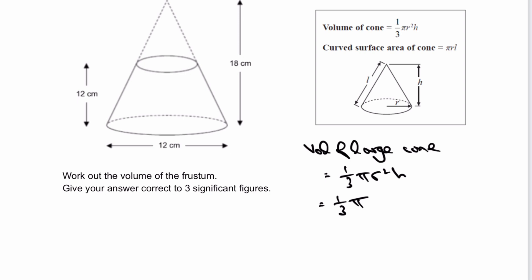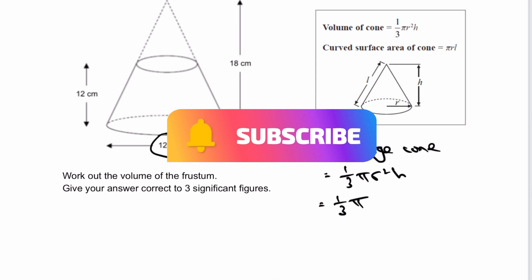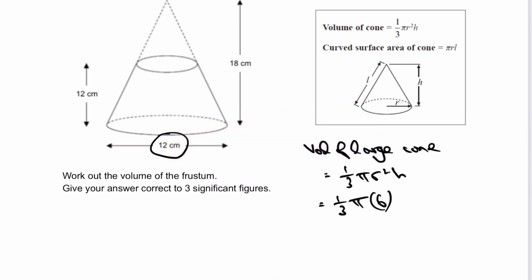The radius of the large cone is 6, since the base diameter is 12. Put that into brackets and square it. Then multiply by h, which is 18. When I've calculated that, I'm going to leave it in terms of π, at least initially, at 216π.